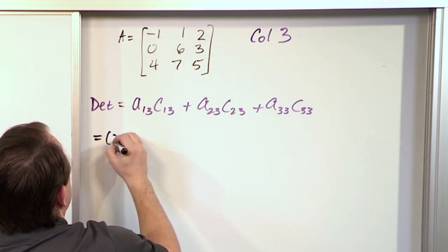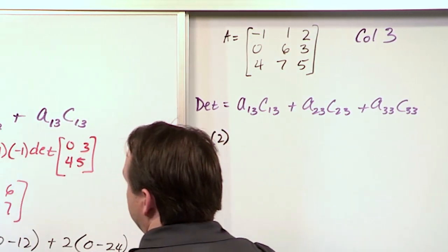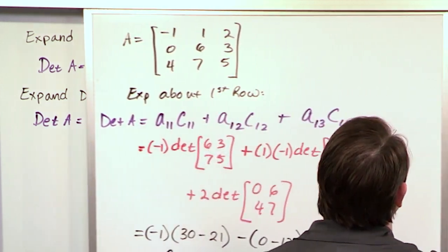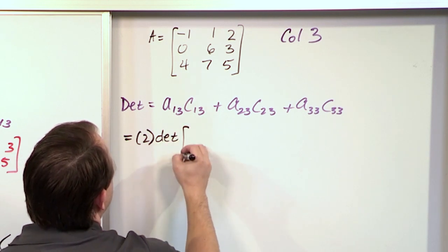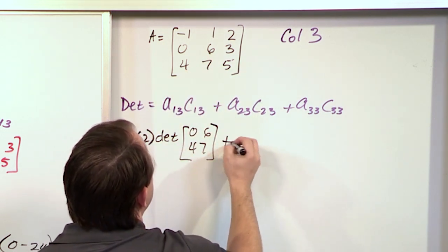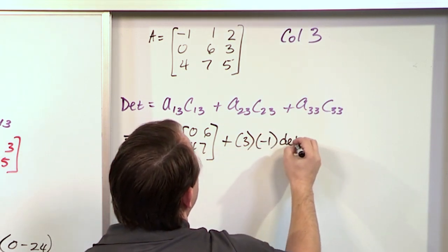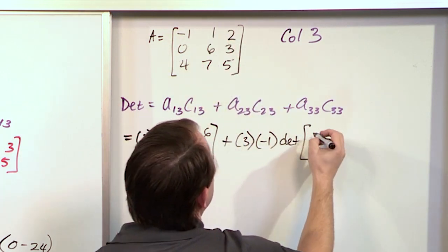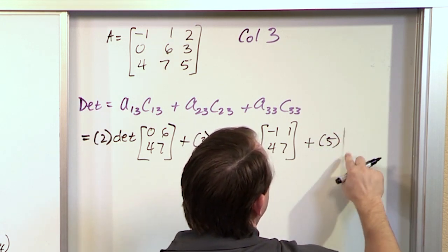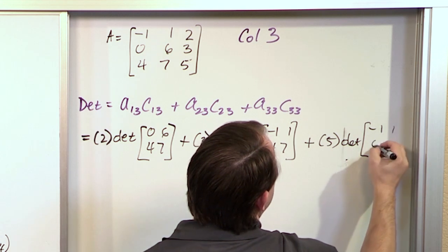So: two times positive determinant of the submatrix — cover first row, third column — to get zero, six, four, seven. Then three times its cofactor, which is negative — cover second row, third column — to get negative one, one, four, seven. Then plus five times its cofactor, which is positive — cover third row, third column — to get negative one, one, zero, six.